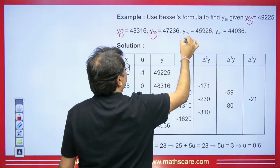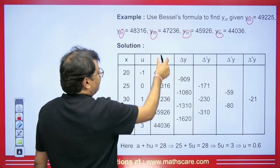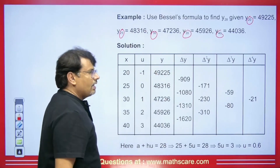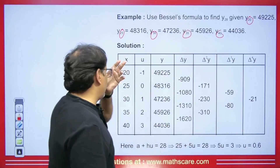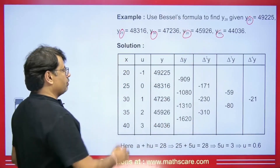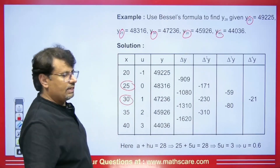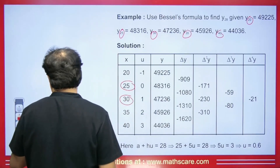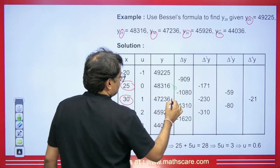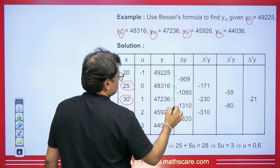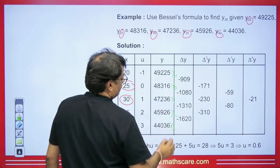We write the X values with a corresponding difference table. The value we have to find is 28, which comes between 25 and 30. We take 25 as Y0 and 30 as Y1. Students often make a mistake here, so pay attention: Y0 is 25, Y1 is 30, Y minus 1 is 20, Y2 is 35, and Y minus 2 is 40. Wait — Y minus 1 is 20, Y2 is 35, and Y3 is 40.